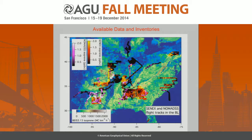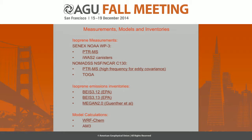Here is what we have as data input for this analysis: the flight tracks from SENEX and NOMADS on top of biogenic emissions maps. This is the base emissions of BEIS 3.13, and the flight tracks shown are only in the boundary layer, color-coded by isoprene. We have lots of data available, but I'm most heavily going to lean on the PTRMS data from the NOAA P3 and the C-130. The C-130 ran the PTRMS at a really high frequency to be able to measure eddy covariance fluxes along the flight track.